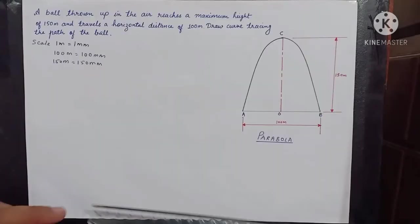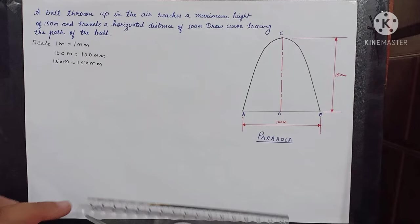Since we can see that the dimensions are very large which cannot be drawn on sheets, we will take a scale: 1 meter equals 1 millimeter. So that will give horizontal distance 100 meters equal to 100 millimeters and vertical distance 150 millimeters.